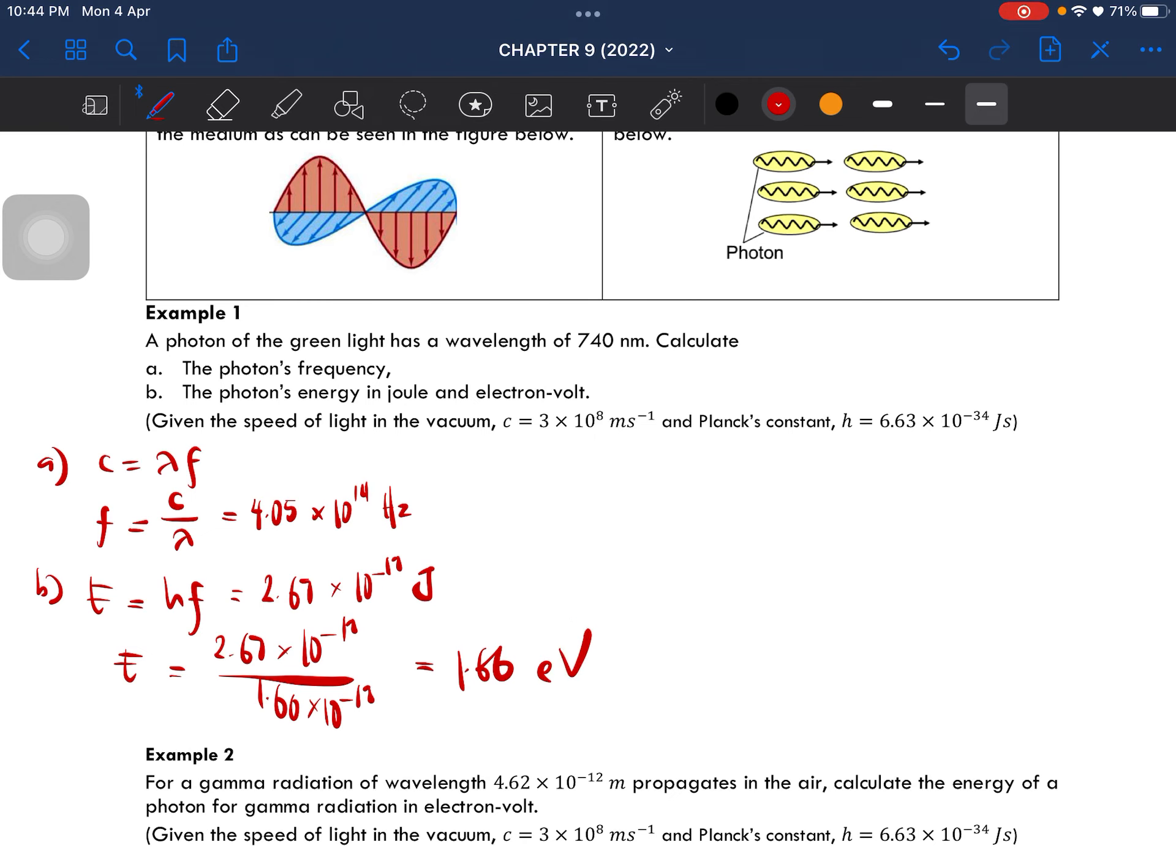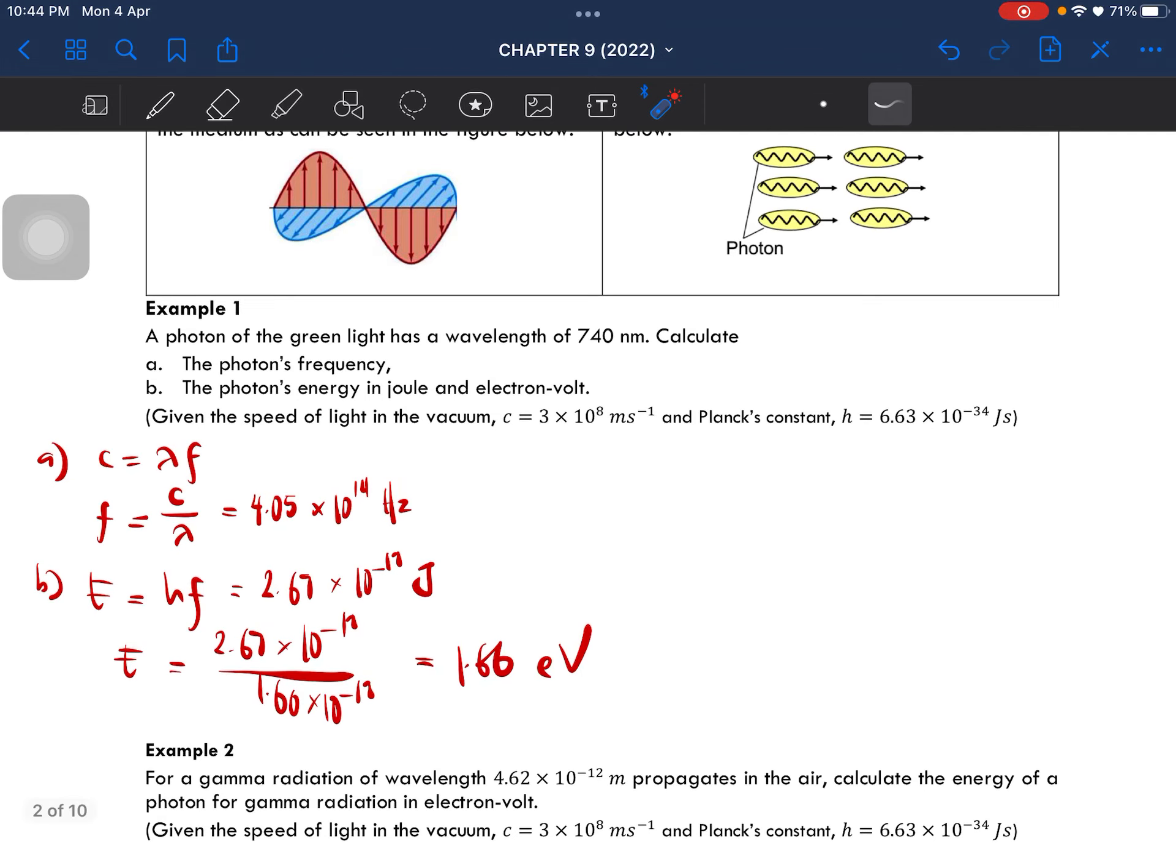So that is the solution for example number one. So this is very straightforward. You just need to know which equation to use. And remember, you need to convert into electron volts. Actually, I think it's given in your formula sheet during PSPM. Alright, so that is all for example number one.